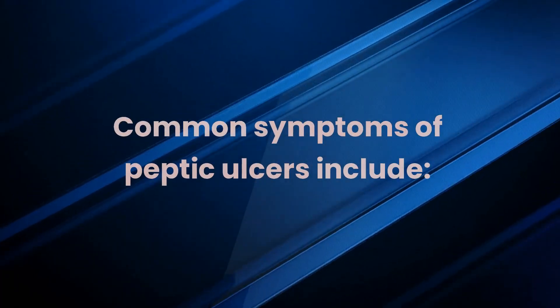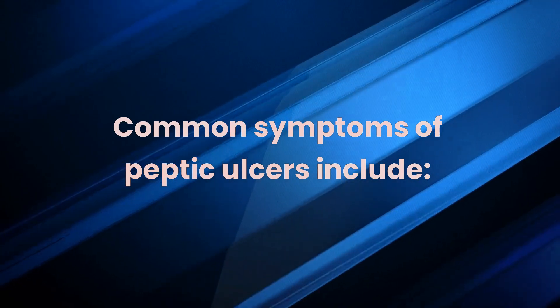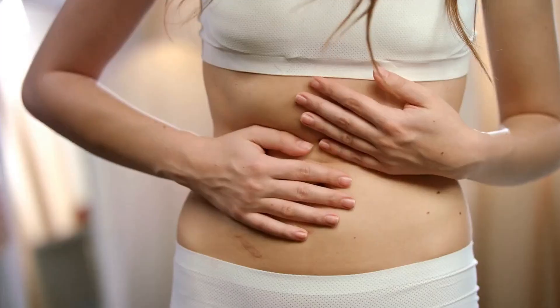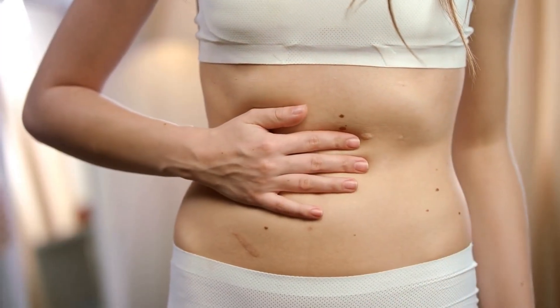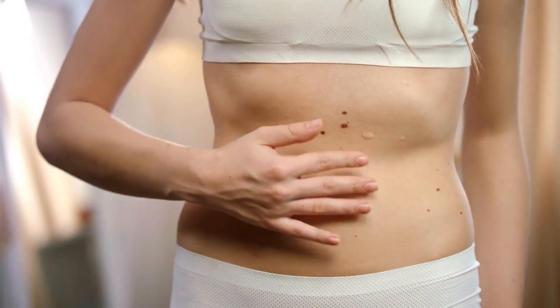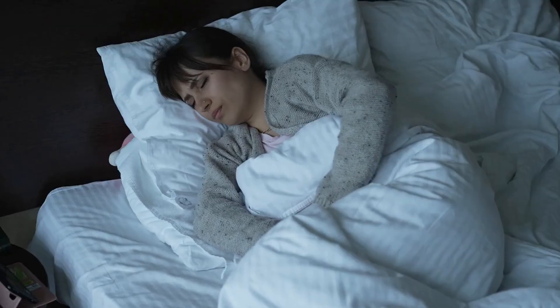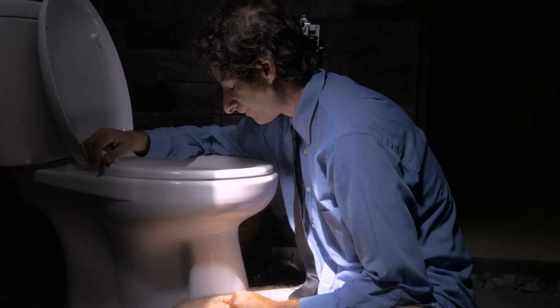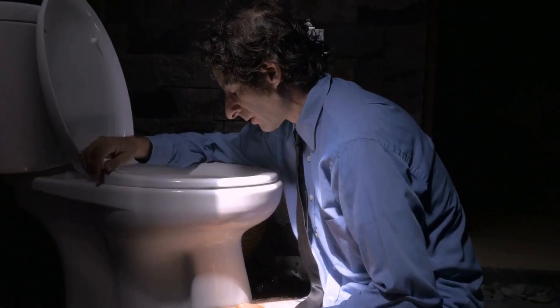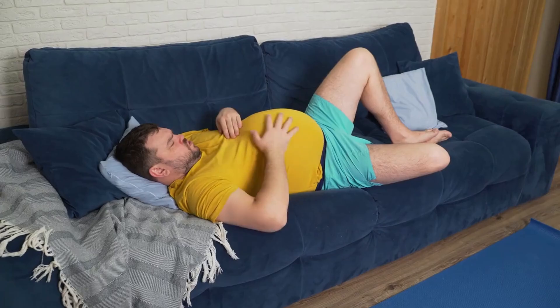Common symptoms of peptic ulcers include burning stomach pain, which may worsen at night or when the stomach is empty; heartburn or acid reflux; nausea and vomiting; bloating; loss of appetite and unintended weight loss; and dark, tarry, or bloody stools.